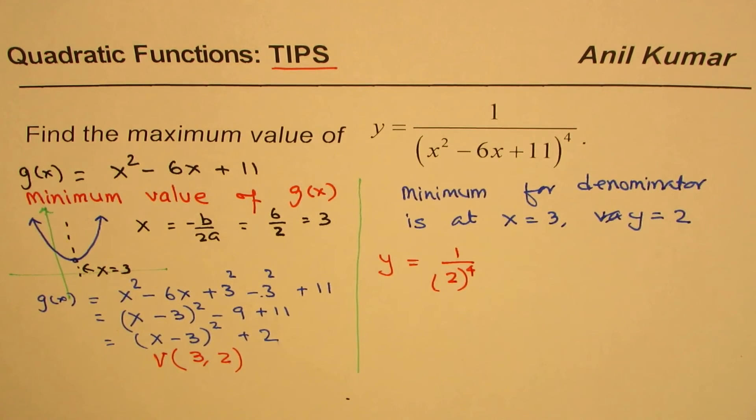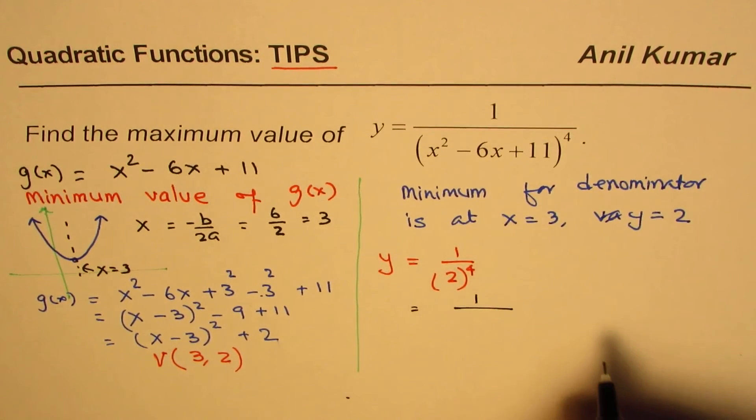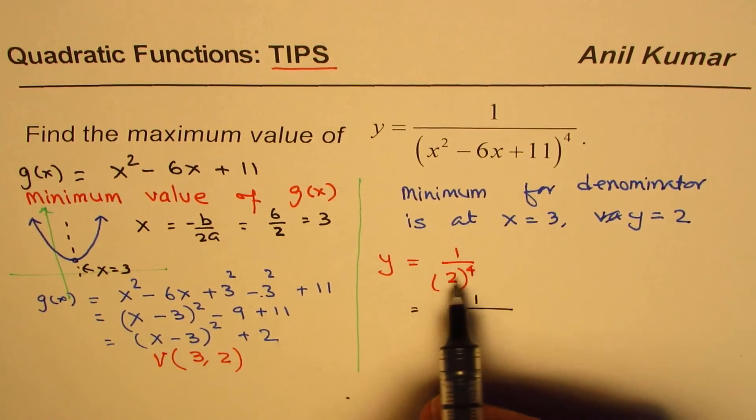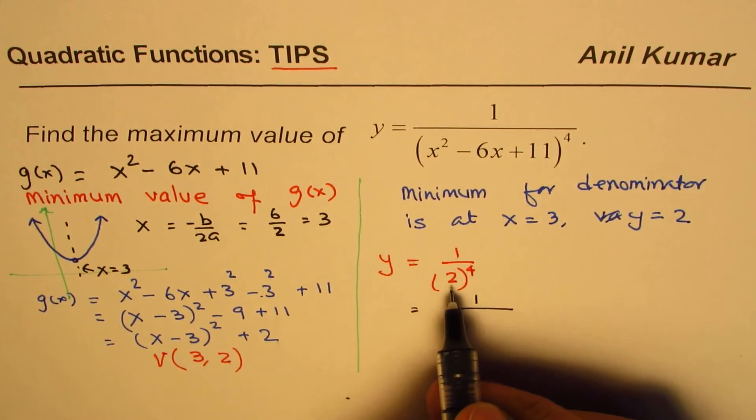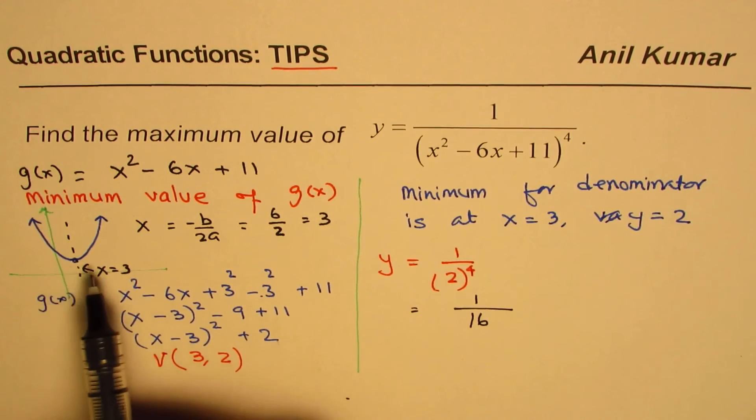So, that is your answer. So, what answer you get here is, you can use the calculator, write decimal value, but I prefer to write this in fractions itself. 2 to the power of 4, 2 times 2 times 2 times 2 is 16. So, y equals to 1 over 16.